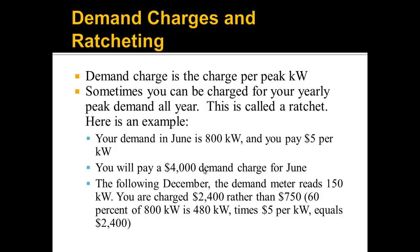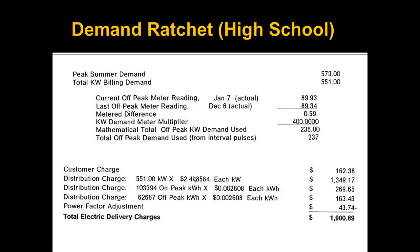Here's a real example of a demand ratchet from a high school in the area. The school's peak summer demand was 573 kilowatts. What they actually used that month was 236 kilowatts. But what they're going to be billed for is 551 kilowatts — just a percentage of the peak summer demand depending on their utility rate. So instead of 236, they're charged for 551 kilowatts. On a bill, you'll often see something like 'peak summer demand' and 'total kilowatt billing demand,' and the billing demand will be higher than the actual off-peak demand used.